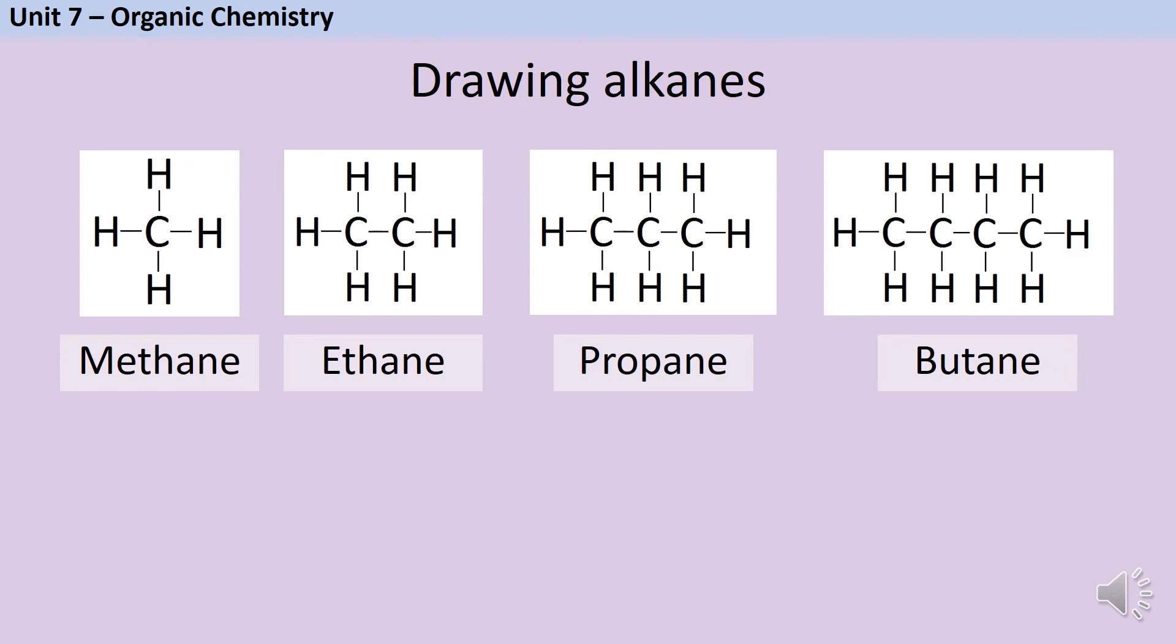Now these prefixes meth, eth, prop and but refer to the number of carbon atoms so you'll be using them again for other classes of molecules such as alkenes and if you're doing triple science then also carboxylic acids and alcohols too.